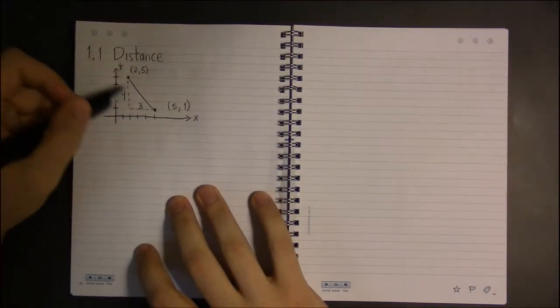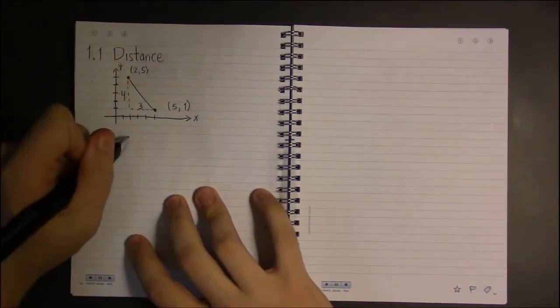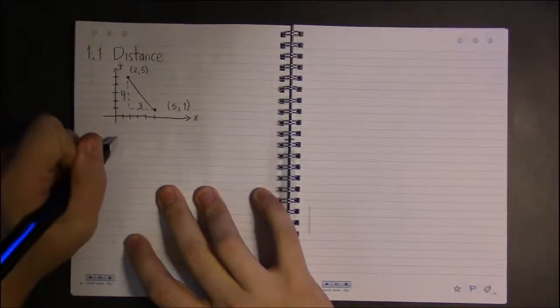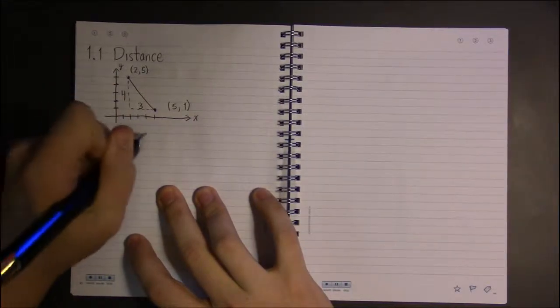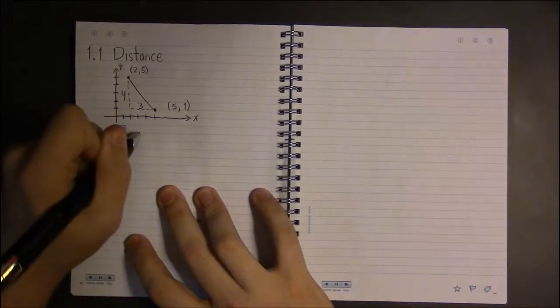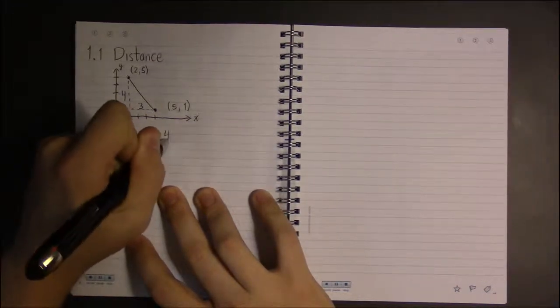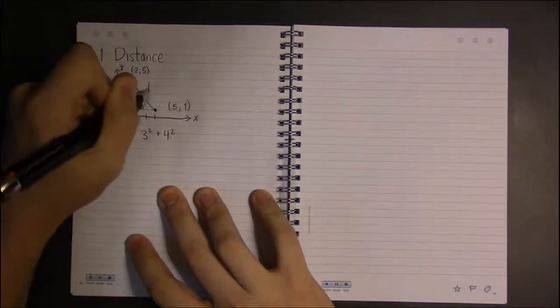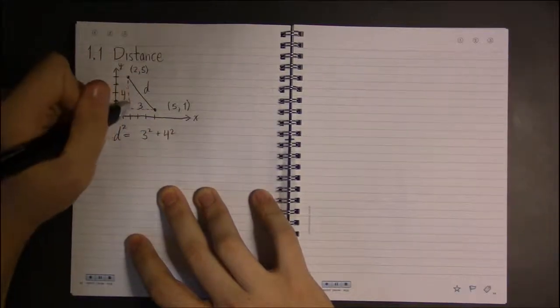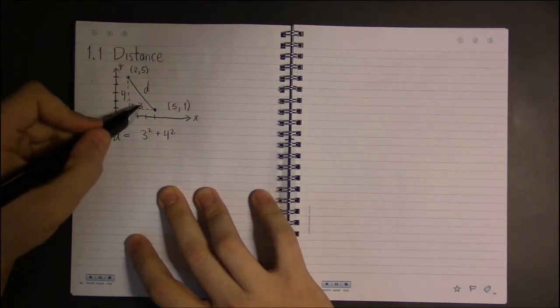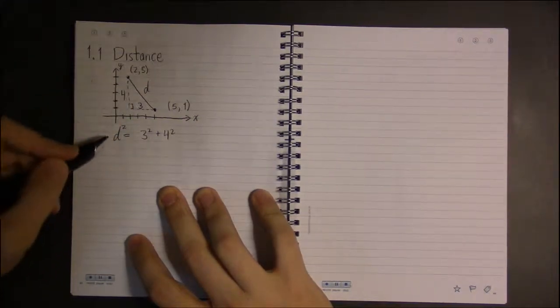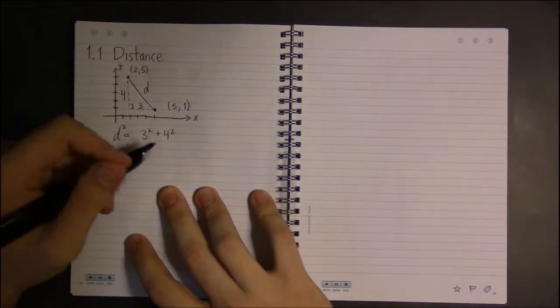So the distance here is simply going to be, the distance squared I should say, is going to be 3 squared plus 4 squared, if this is our distance d here. Because what we have is a right triangle, a 3, 4, and this will end up being 5, right triangle.